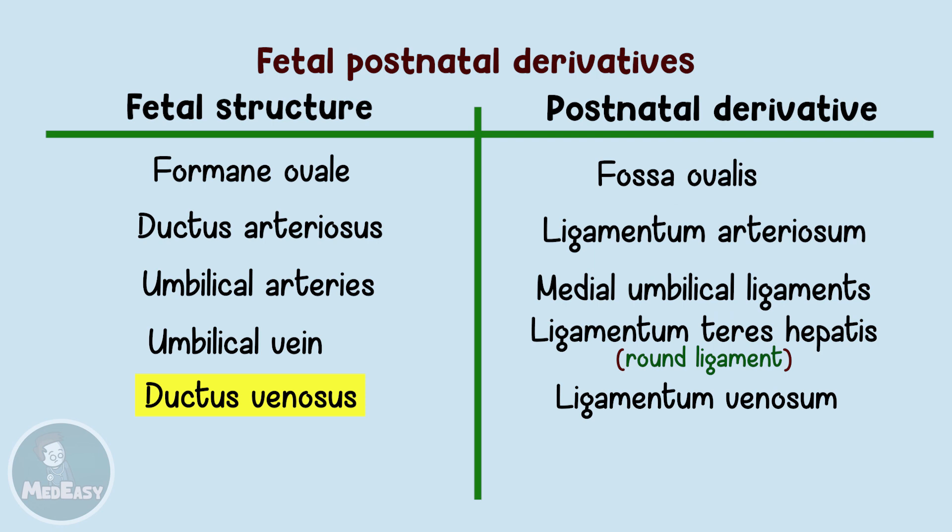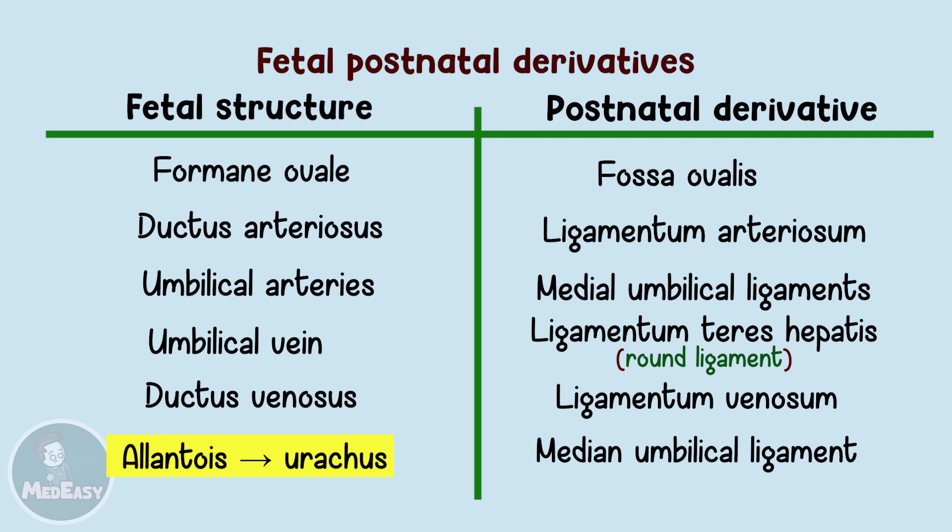The last derivative we'll discuss is the allantois and urachus. They are not part of the fetal circulation, which is why they are mentioned last. In early embryonic development, the bladder is connected to the umbilical cord by the allantois, but around the 7th week of development, the allantois is obliterated and becomes a fibrous cord referred to as the urachus, which drains the fetus's urinary bladder. After birth, the urachus becomes the median umbilical ligament.